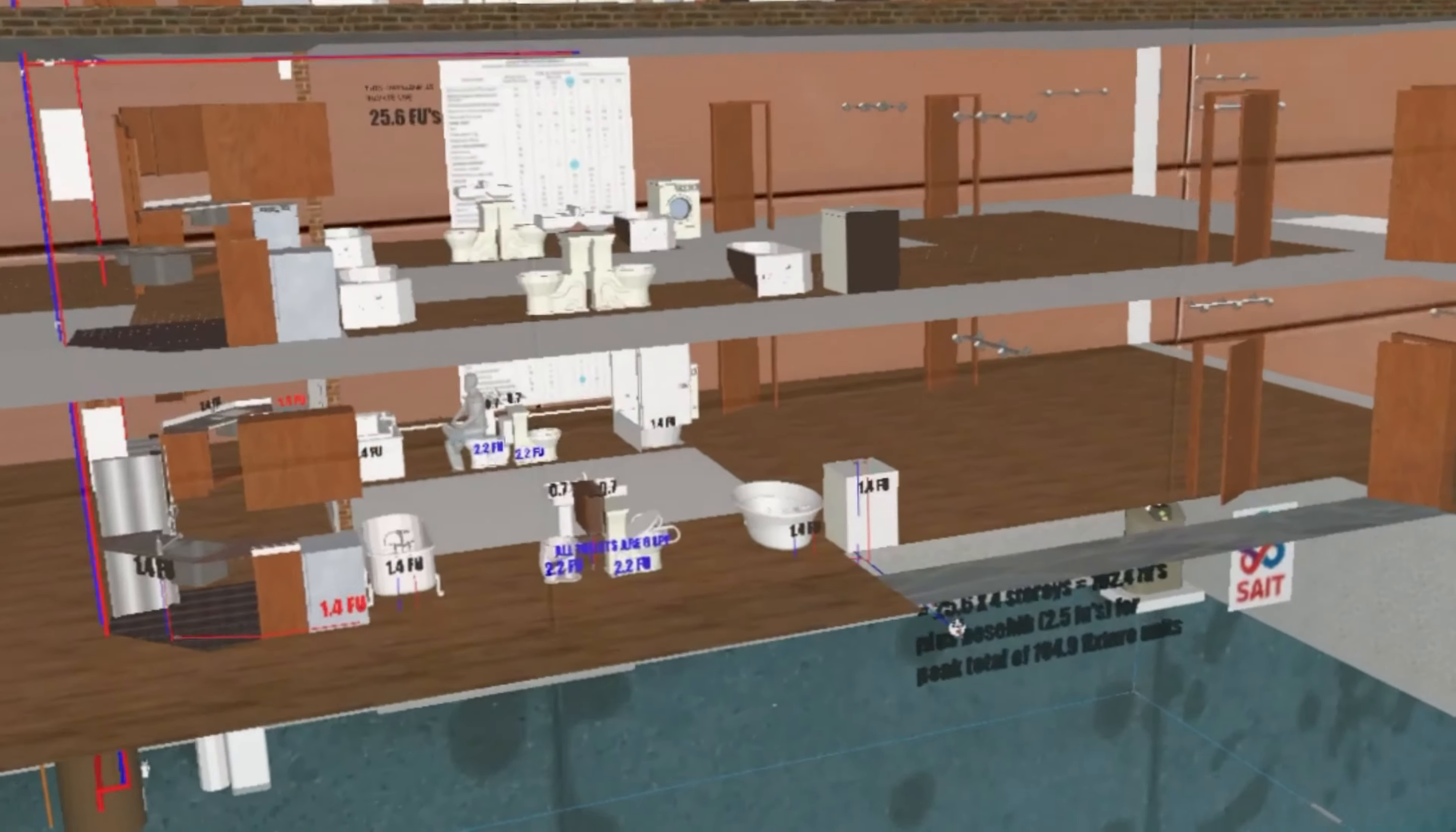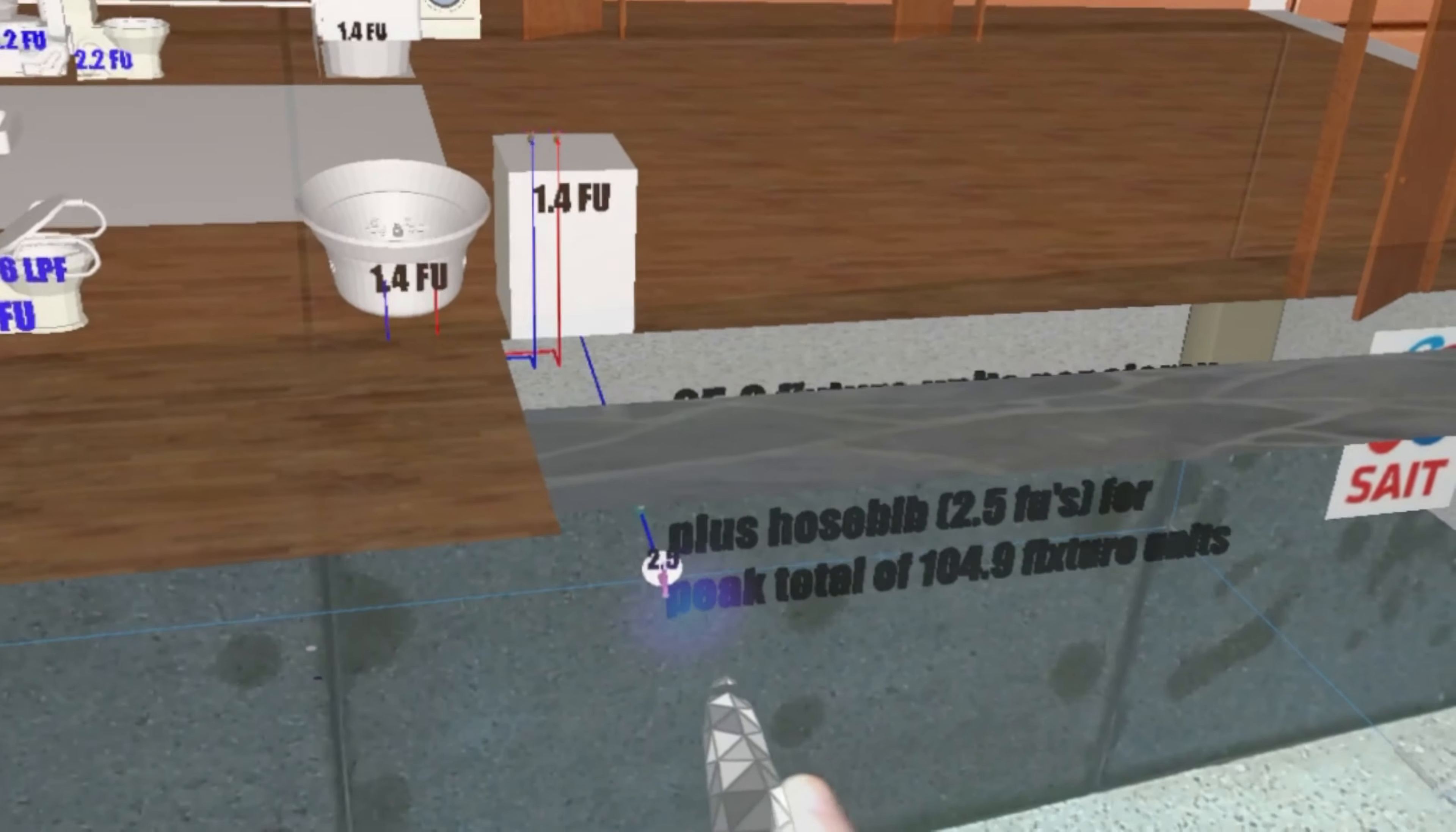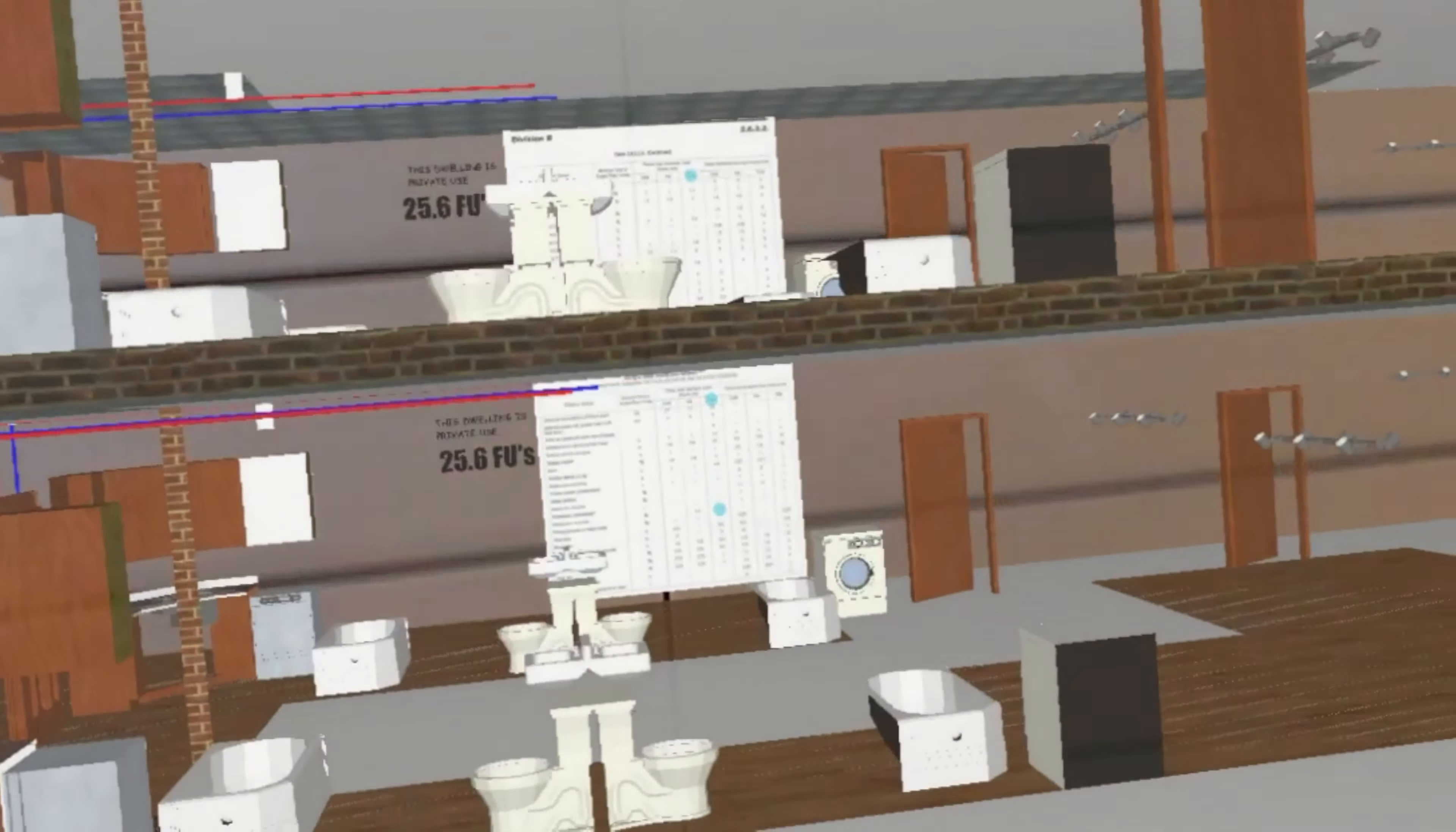Now we go into more detail because then there's also tables that tell you what the separate fixture unit loads of all these fixtures are. That's how I came up with 104.9. Like for instance, I had to add 2.5 because of this little hose bib right here that is for the lawn in the front. That's why I added that one. Anyhow it's 104.9.